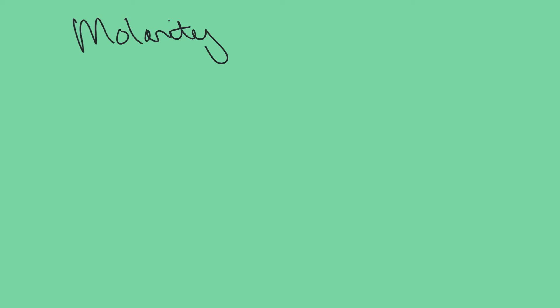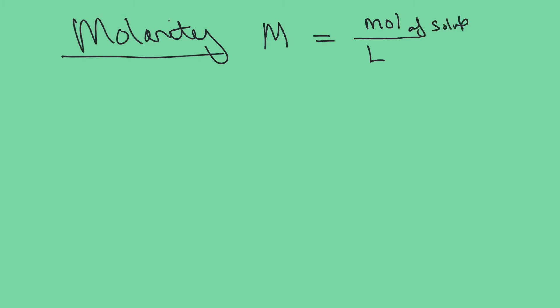Hi guys, this is Mrs. Foy and this is a screencast about molarity. Molarity is abbreviated as capital M and it's a double unit, like miles per hour. Capital M, molarity, stands for moles over liters — specifically moles of the solute versus liters of the solution. This is a way of telling how concentrated something is in a liquid solution.